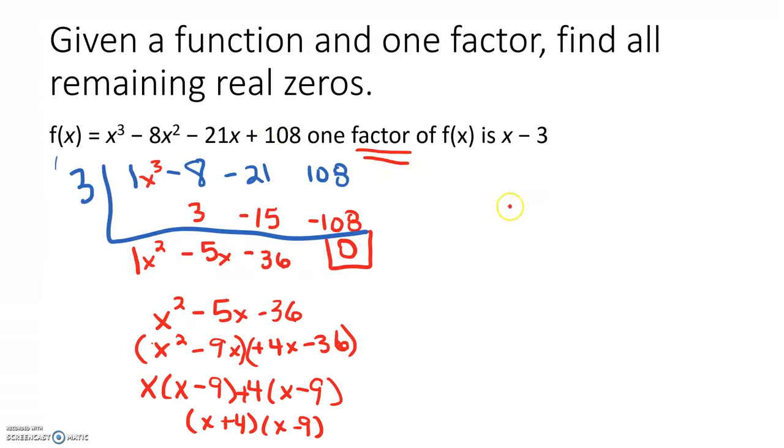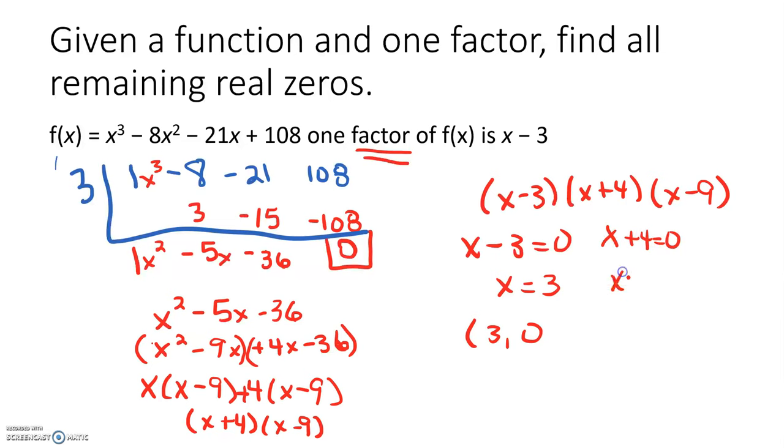So using the original factor that we were given – x - 3 and the 2 that we found – x + 4, x - 9. We can solve to find out that our zeros are x equals 3, which would be the point (3, 0). So x equals -4, 0 and x - 9 equals 0, which would be x equals 9 or the point (9, 0). So these would be our three zeros for our cubic expression.